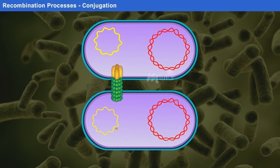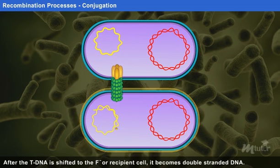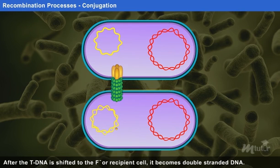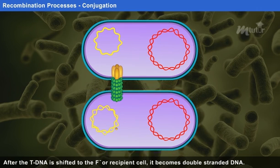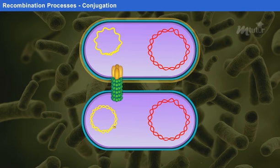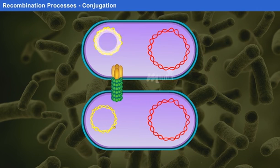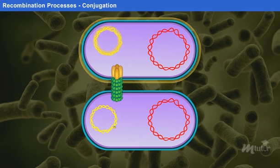Once the entire T-DNA is moved to the F-minus cell, the relaxase joins the ends to make the circular DNA. As the T-DNA is shifted to the F-minus or recipient cell, it is replicated into double-stranded DNA. In the F-plus cell, the DNA of the F-factor also gets replicated, forming double-stranded DNA.